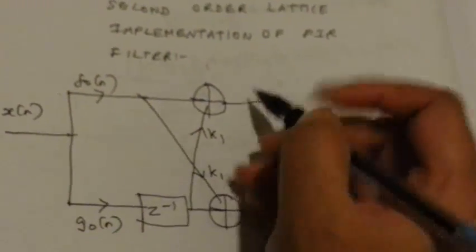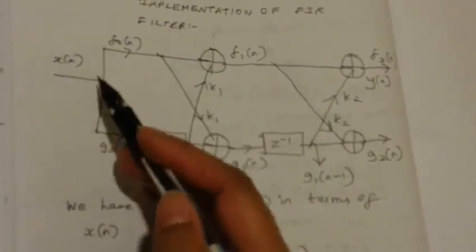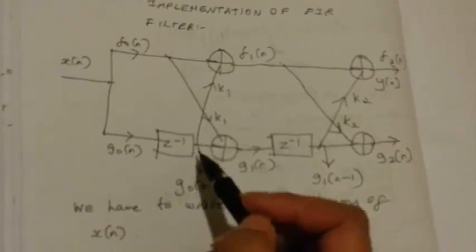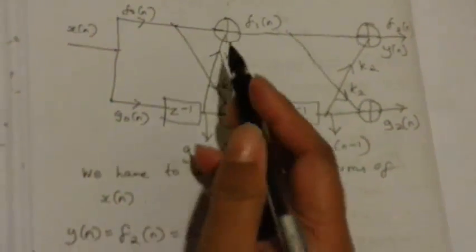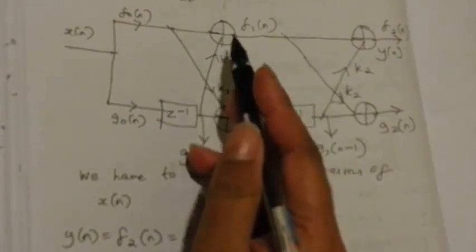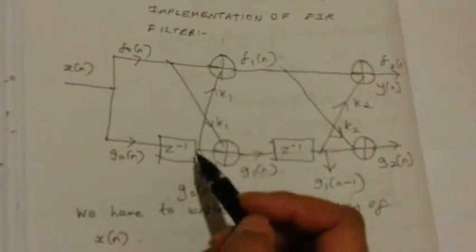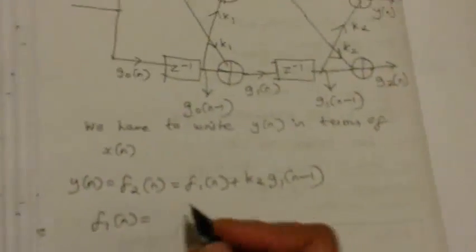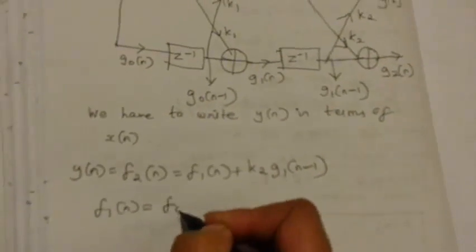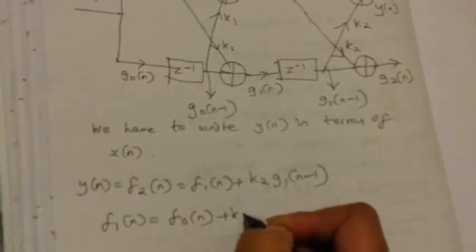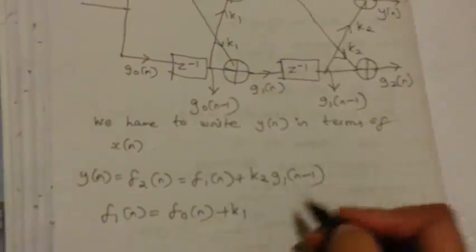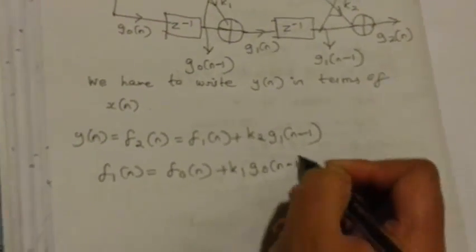The output of the first section will be F1 of N — this is not the final output. So what I have drawn is two first order sections. The output of the first section is F1 of N and G1 of N, which goes into the second section. The output of the second section is the final output Y of N, which is F2 of N.